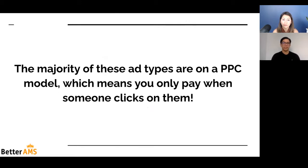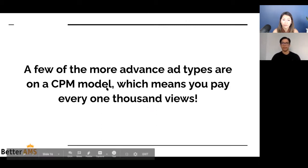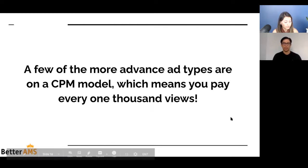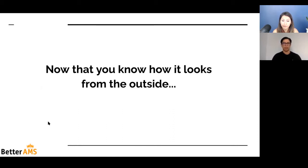The majority of these ad types are in a CPC model — cost per click — which means you only pay for the clicks you get. That click is set at a certain price and you pay that price for the total number of clicks. But there are a few more advanced ad types in a CPM model, which means you pay for every thousand views. You only see this on sponsored display, which we'll cover later. I want you to be aware of the CPM model as well because it's kind of new and people are not talking about it at all.